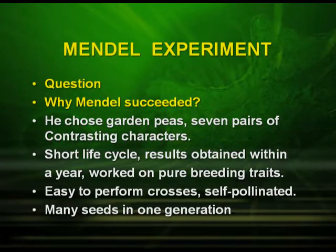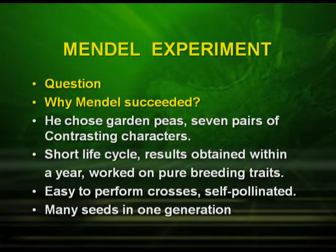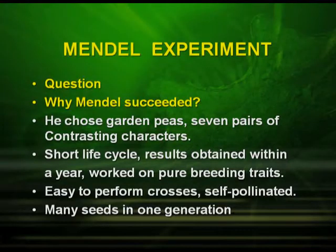Now let us study Mendel's experiment. Why did Mendel succeed? He chose the garden pea, which has seven pairs of contrasting characters. It has a short life cycle, so results were obtained within a year, and he worked with pure breeding lines. Cross pollination was easy to perform in garden pea, and importantly, it is a self-pollinated plant.